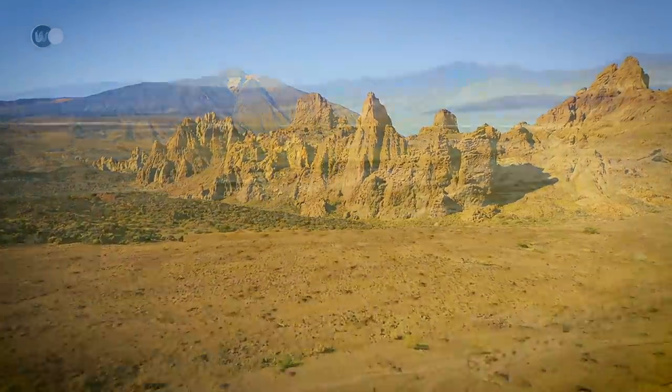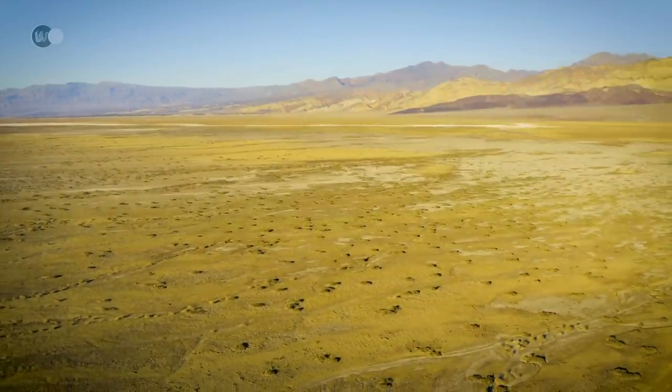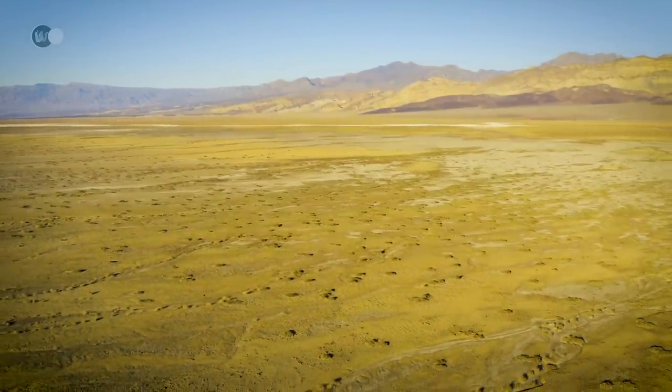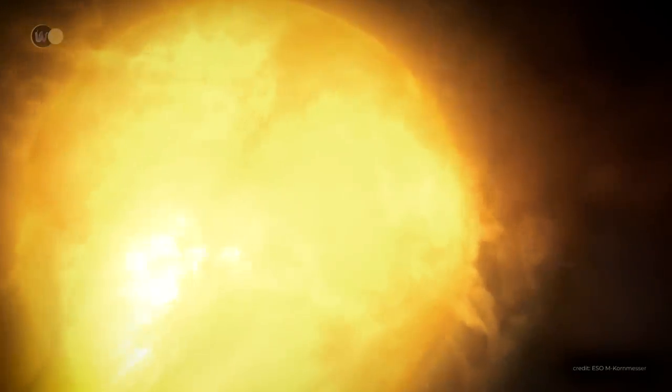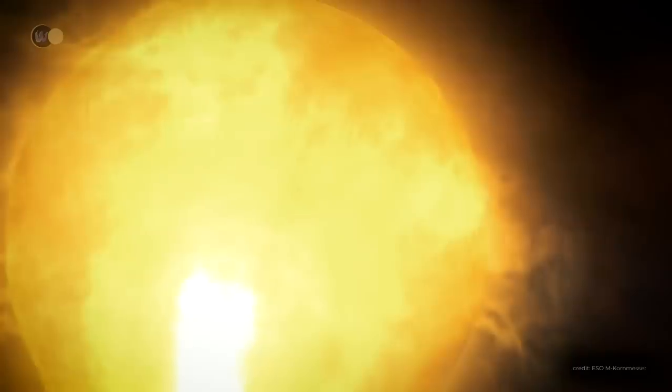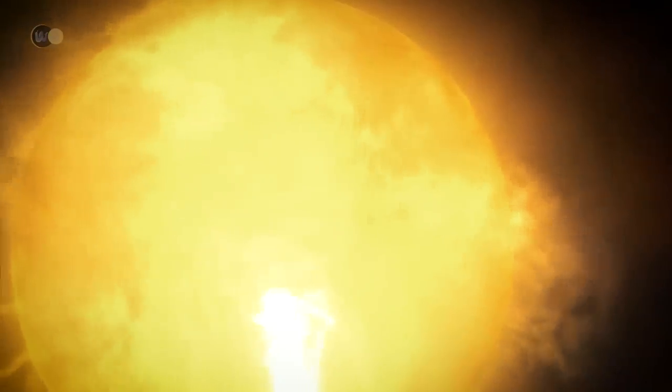Under these conditions, life as we know it will no longer be able to exist. Then, in around five billion years' time, the Sun's core will run out of hydrogen, and it will swell into a red giant.